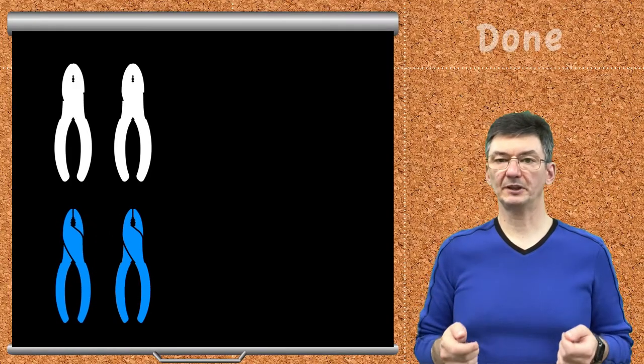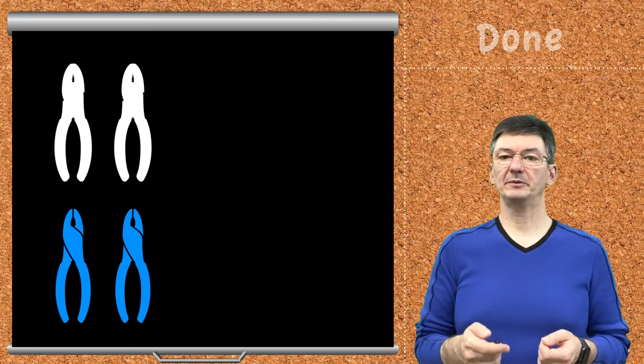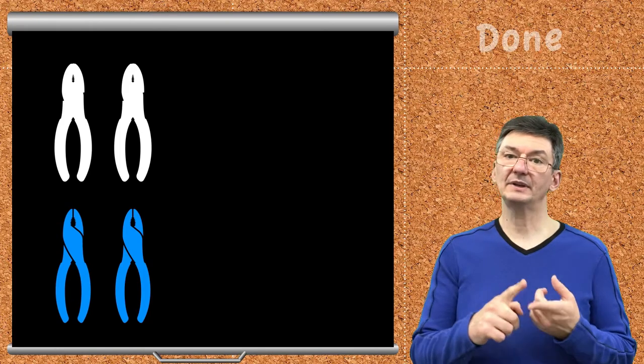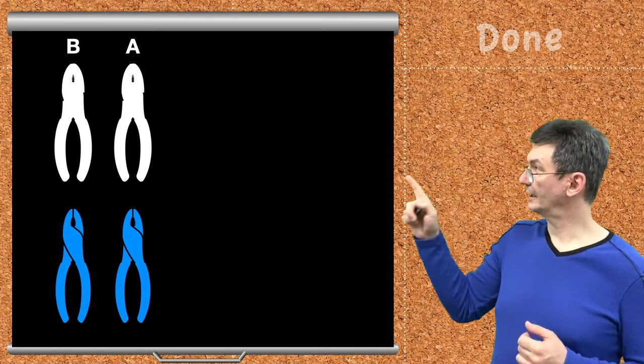But what if I have two similar pliers? What should we do now? How can we differentiate between those two? One way is to write the label for a place. Let's say, plier A and plier B.